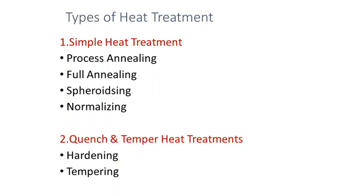The overall classification of heat treatment includes, first, the simple heat treatment process, under which come process annealing, full annealing, spheroidizing, and normalizing. The simple heat treatment processes mainly involve types of annealing and normalizing.